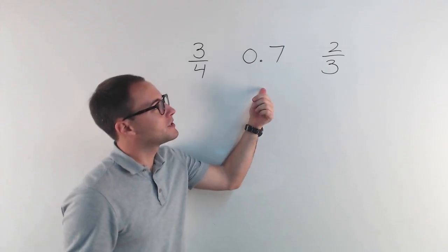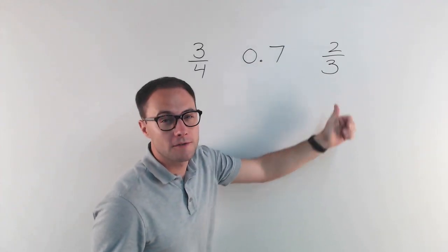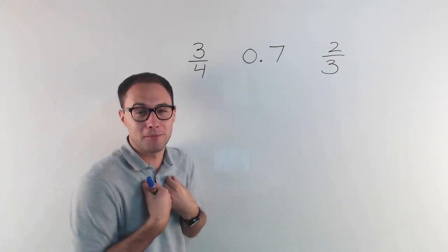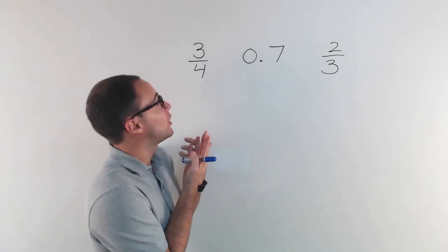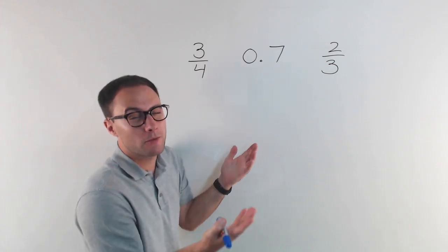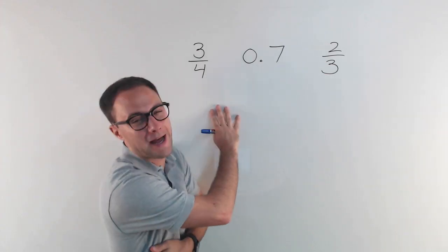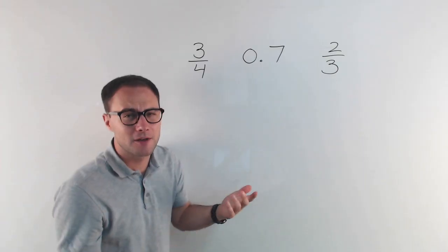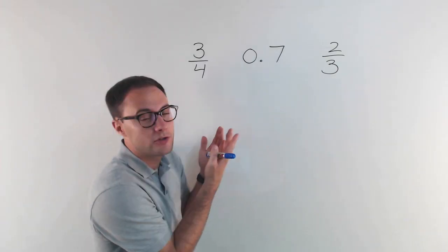Three-fourths of a cookie, 0.7 of a cookie, or two-thirds of a cookie. I want the most cookie I can get, so I want to choose which one's greater. The problem is we've got fractions and decimals, so it's a bit tough to compare.